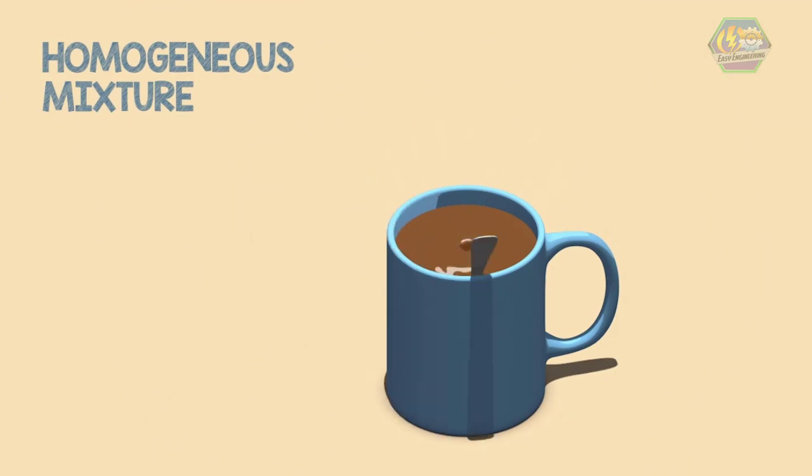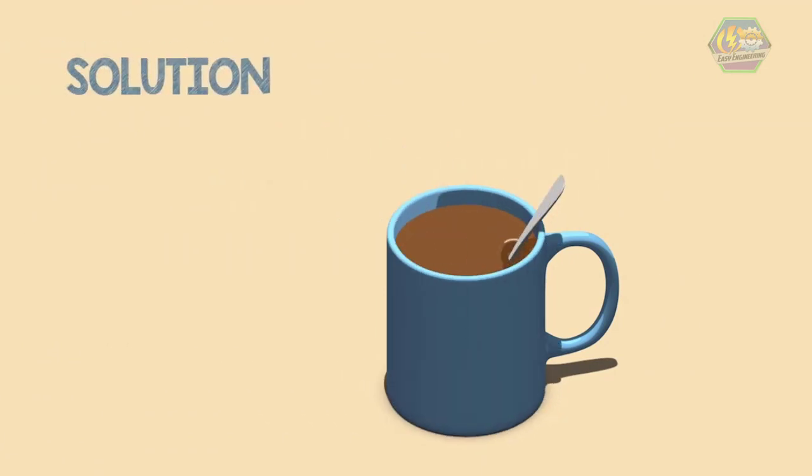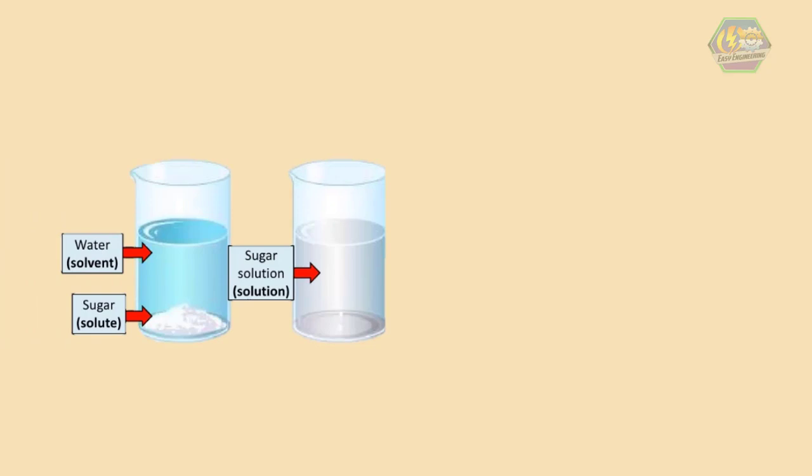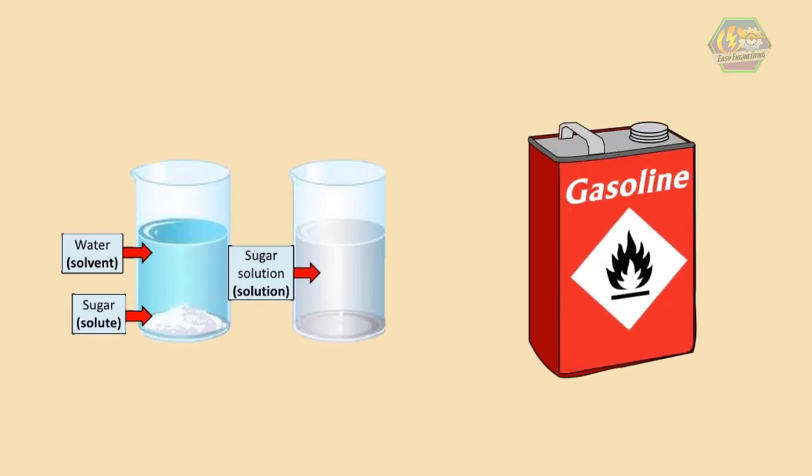A homogeneous mixture may also be called as a solution, in which one substance—the solute—dissolves completely in another substance, the solvent. Usually the solvent is a liquid, however the solute can be solid, liquid, or gas. Other examples of homogeneous mixtures include sugar water, which is the mixture of sucrose and water, and gasoline, which is a mixture of dozens of compounds.